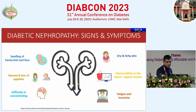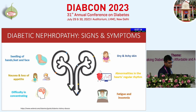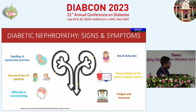When a patient presents in OPD with diabetic nephropathy, the pointers indicating glomerular involvement include swelling of hands and face, nausea and vomiting in later stages, difficulty in concentration, dry and itchy skin, irregularities in heart rhythm or atrial fibrillation — the most common rhythm disturbance seen in OPD — as well as fatigue and insomnia.